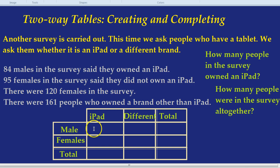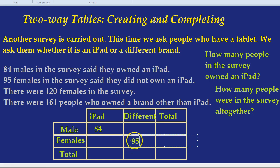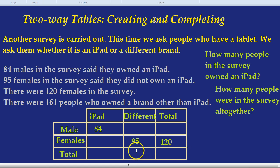And watch how quickly we can find out the answers to our questions. We know there's 84 males who said they owned an iPad, so we fill that in. There are 95 females who said they did not own an iPad, so that's a different brand. So that's 95. There are 120 females in total, so 120 females in total. And there are 161 people who owned a brand other than iPad. So the total for people who owned a different brand is 161.